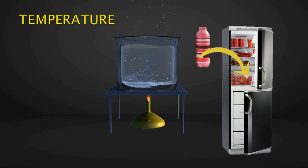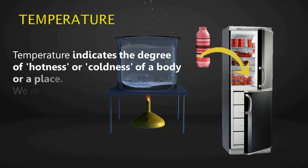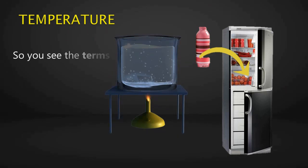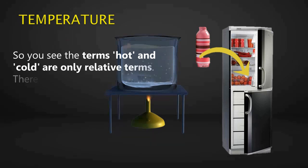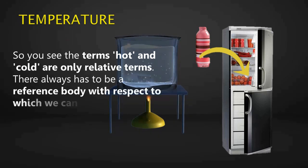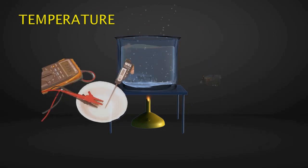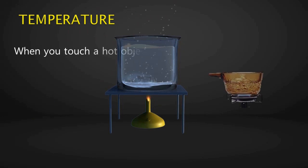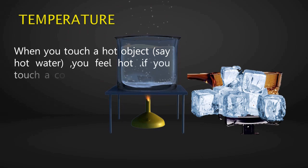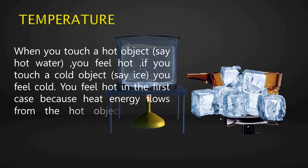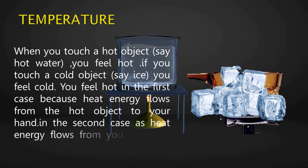Temperature: why does a bottle of water feel cold in the fridge while it is so hot outside? The answer lies in the concept of temperature. Temperature indicates the degree of hotness or coldness of a body or a place. Our own sense of hot and cold can sometimes be misleading — the terms hot and cold are only relative terms. There always has to be a reference body, so it is important to use an instrument rather than our own judgment to measure temperature. You feel hot when touching a hot object because heat energy flows from the object to your hand, and you feel cold touching a cold object because heat flows from your hand to the cold object.